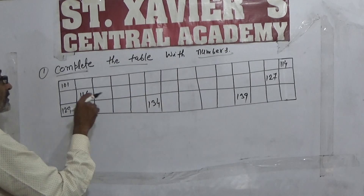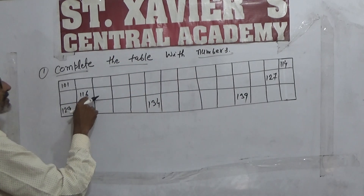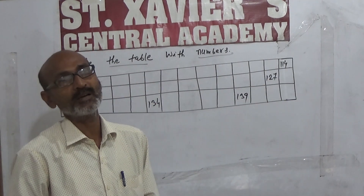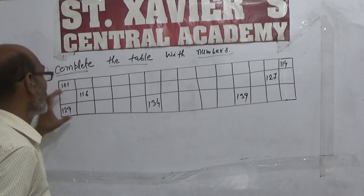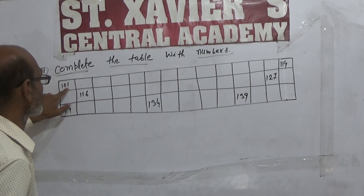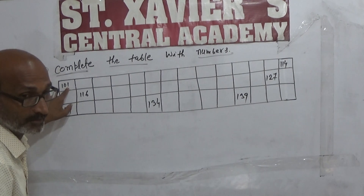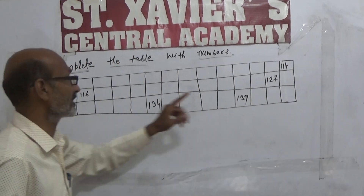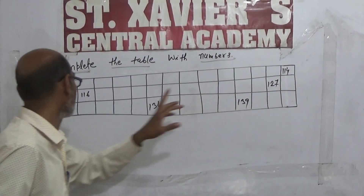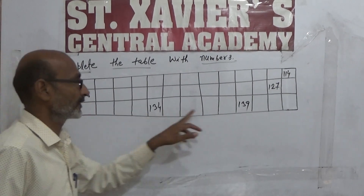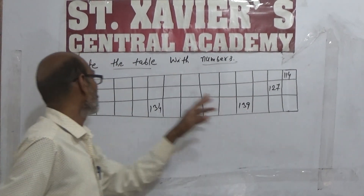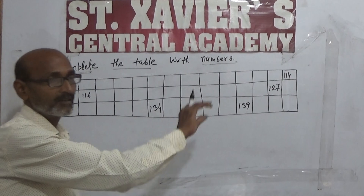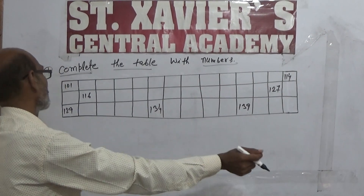14 के बाद 15, फिर यहाँ दिख रहा है 16, 17, 18, 19 — इस तरह आगे बढ़ते जा रहा है। यानि यह ascending order में आगे बढ़ते जाना है। इस टेबल से दिख रहा है कि हमारा number 101 से शुरू होता है, और ये number बढ़ते जाना है — 114 हो गया, यहाँ 116 है, 127 है, 129 है, 134, 139। मतलब ये number धीरे-धीरे बढ़ते जाना है।